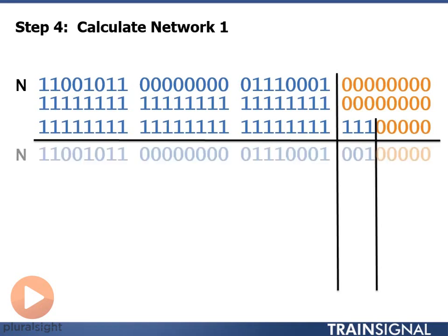Now to calculate network number one, what I'm going to do this time is put a binary one in my three borrowed bits. So I convert one to binary, which is one, and then I put it into my borrowed bit section, those three bits that I borrowed from my host portion to move into network portion, and then I put all zeros in my host portion to calculate my network address. So I have a one in my network portion and zeros in my host portion.